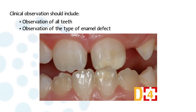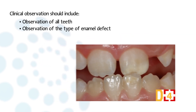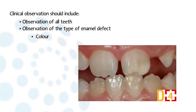Identify the type of enamel defect. What is the color and aspect of the enamel? Is there a loss of enamel thickness? The defect could be a hypoplasia when the surface and thickness of enamel are preserved, but if we observe a discoloration, the defect is rather a hypermineralization.